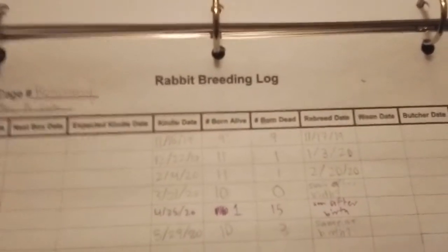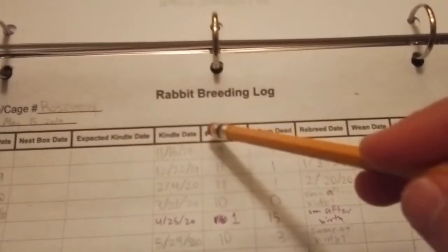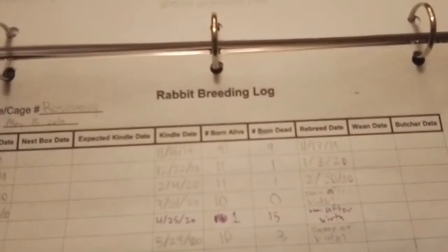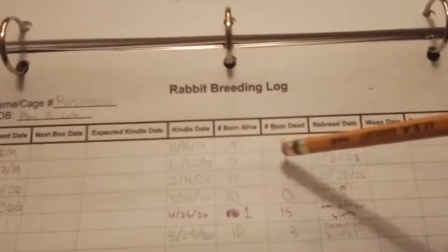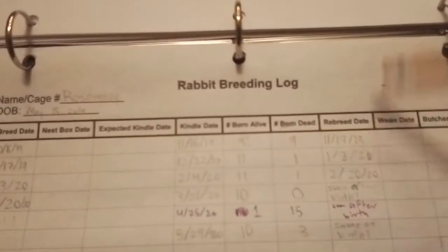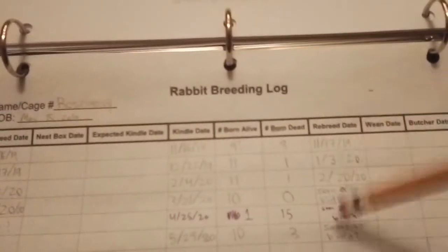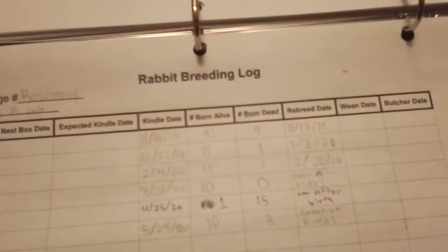I think it'd be nice if they changed born alive and born dead to be the number of kits born total and then the number that died. I'd prefer to see instead of having to add up - oh, eleven plus one means they had twelve total - I'd just see twelve and then how many died.